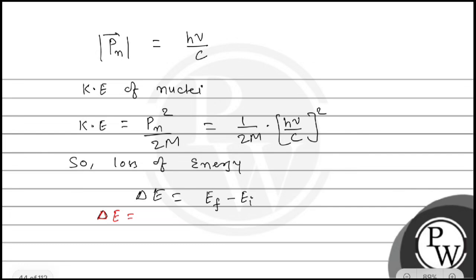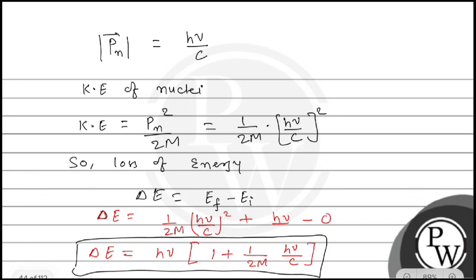So delta E - what do we have? Final will be kinetic energy of nucleus plus kinetic energy of gamma-ray photon. So we have 1/2M times (hν/c)² plus hν, minus initial which is 0. So we have delta E equals hν common, so 1 plus 1/2M times hν/c². This is the loss in energy, and c² goes here.